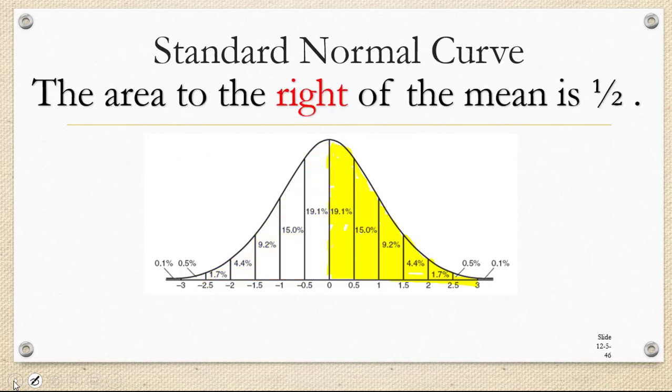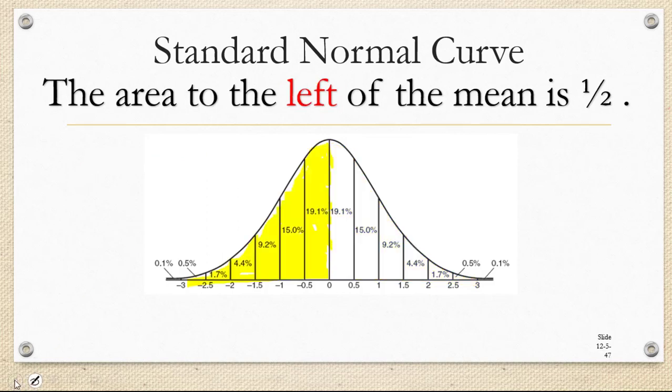Because of the symmetry of the curve, 50% of the data lies to the right of the mean. Or in other words, 50% of the data is above a z-score of 0. This means that the area to the right of the mean is the decimal form of 50%, which is 0.50 or 0.5. Similarly, the area to the left of the mean is also 0.5.